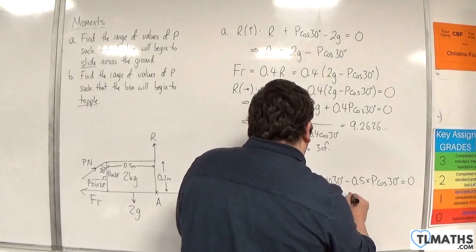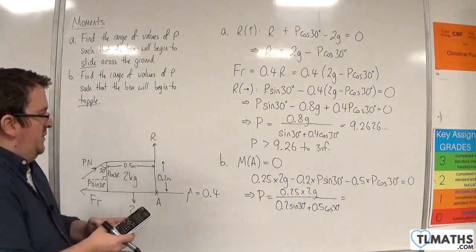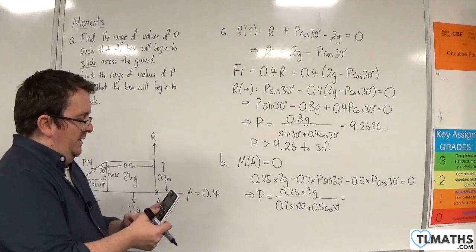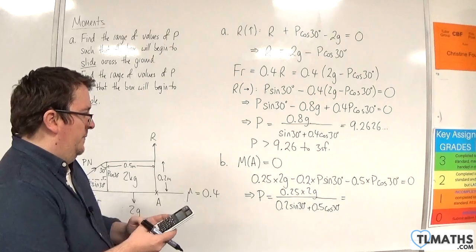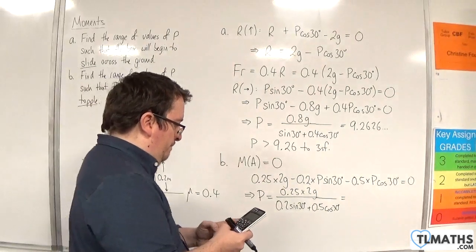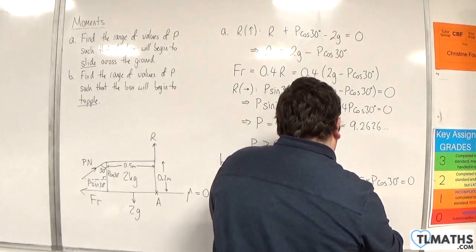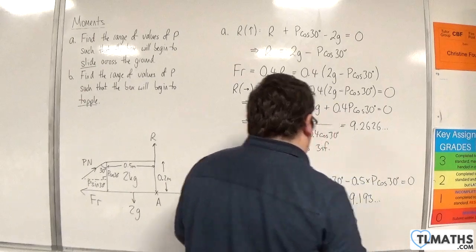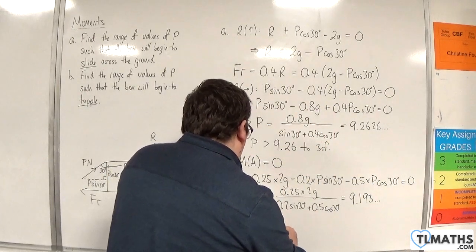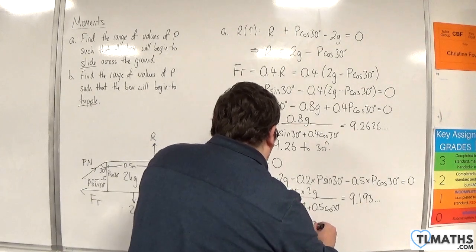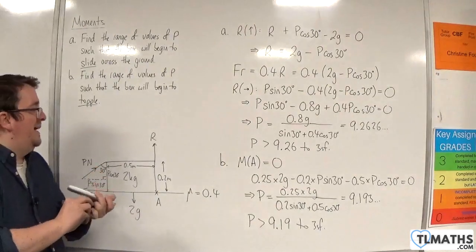I've done a couple of steps in one there, as before. So P equals 0.25 times 2G, divided by (0.2 sine 30 plus 0.5 cosine 30). That's 0.25 times 2 times 9.8, divided by (0.2 times sine 30 plus 0.5 times cosine 30), which gives 9.19 to three significant figures. So if P is greater than 9.19, the box will begin to topple.